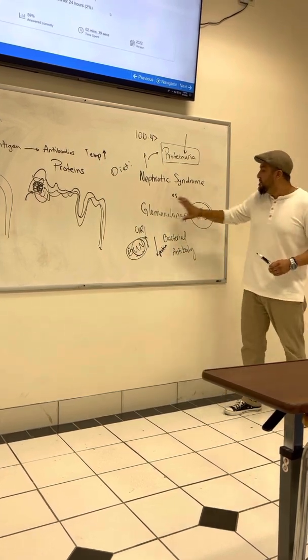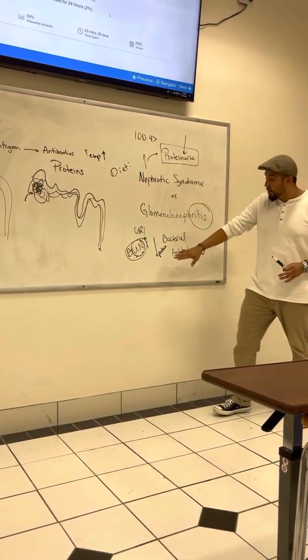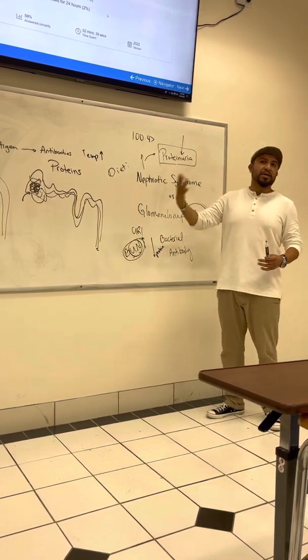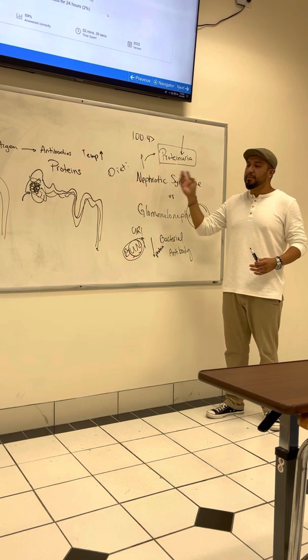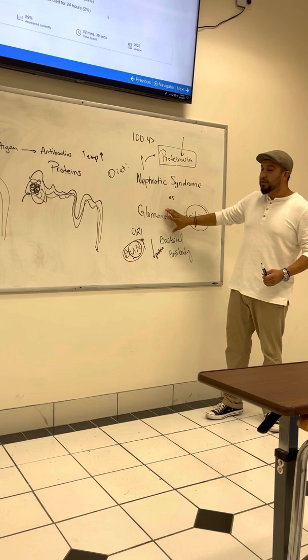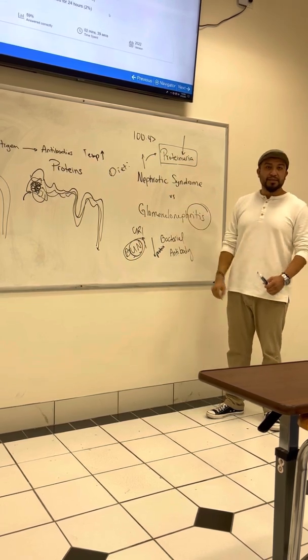So, remember, glomerulonephritis is the bad one that you have to restrict protein. Nephrotic syndrome is the physiology. It just forgets how to allow substance to go out and then to stay in. And so, that's why for this one, you increase protein. For this one, you decrease it. Make sense, guys?